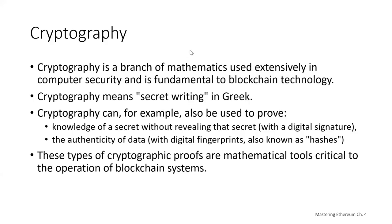Ethereum, like all cryptocurrencies, is based on cryptography, which is a branch of mathematics used extensively in computer security. Cryptography means secret writing in Greek, but the study encompasses more than just encryption. Cryptography can also be used to prove knowledge of a secret without revealing it — sometimes called a zero-knowledge proof — create digital signatures, and prove the authenticity of data, sometimes referred to as digital fingerprints or hashes. These cryptographic proofs are mathematical tools critical to Ethereum and other blockchain systems.